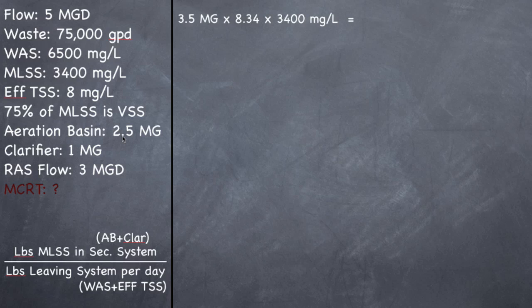So 2.5 million gallons plus 1 million gallons equals 3.5 million gallons times 8.34 pounds per gallon times 3,400 mixed liquor suspended solids milligrams per liter. And when you multiply all that out, you should get 99,246 pounds of mixed liquor suspended solids in the secondary system. That's the top part of the formula.